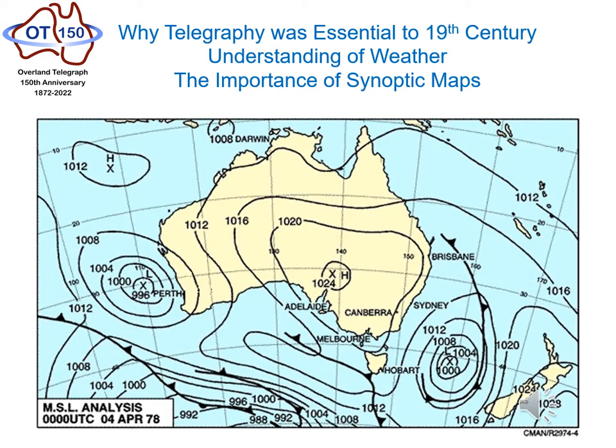As a snapshot of the current weather, the observations used to construct the map have to be recorded at the same time — they have to be time synchronous. And importantly, the more readings that are available, the more accurate and informing the maps are. These demands of timing and volume of observations could only be served by a ubiquitous and fast communication system.